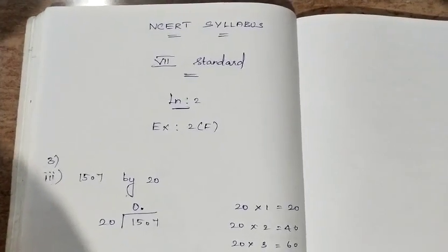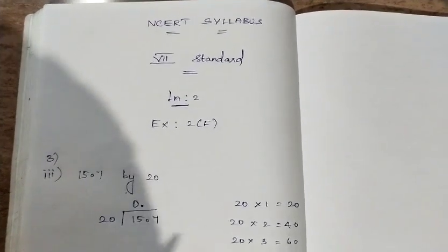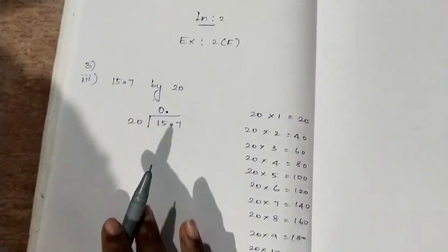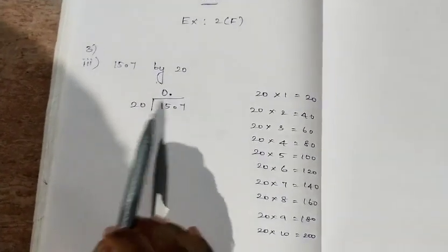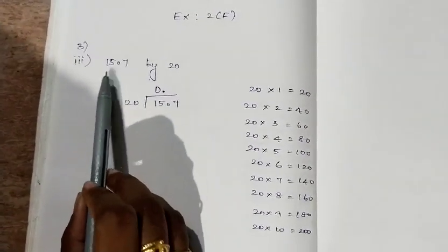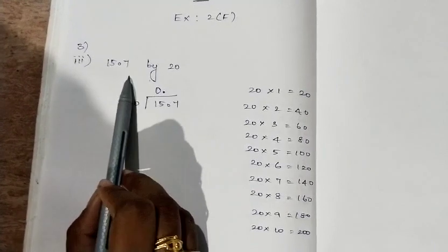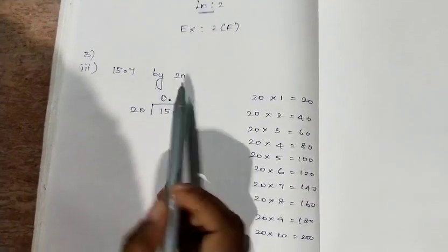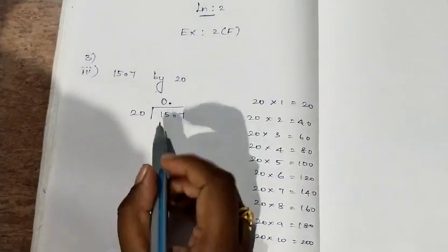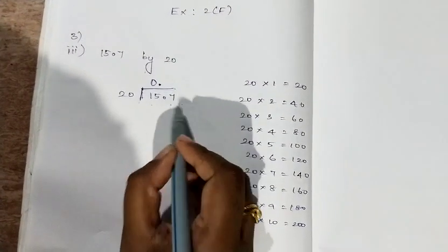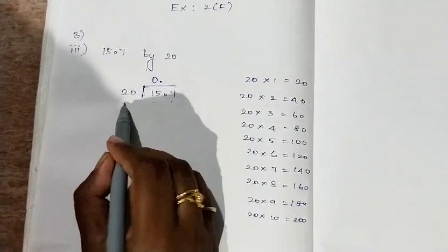In this video we are going to see the alternative simple method for the same sum that we did in the last video. The question is we should divide 15.7 by 20, so here I am going to divide 15.7 by 20.